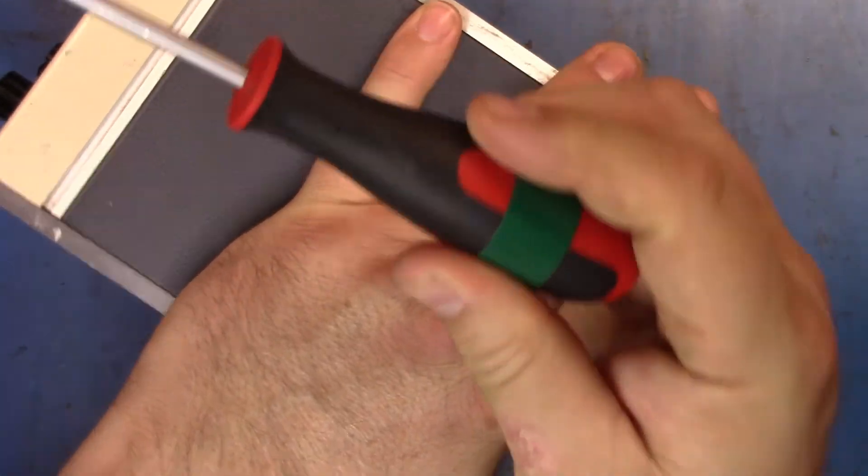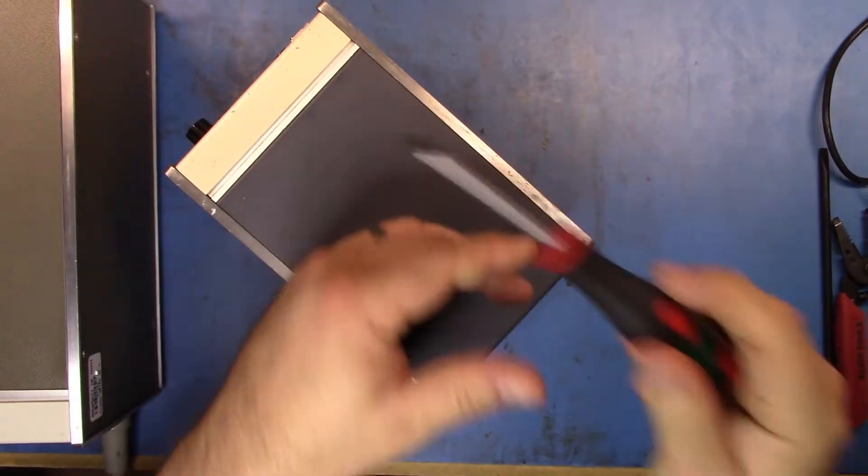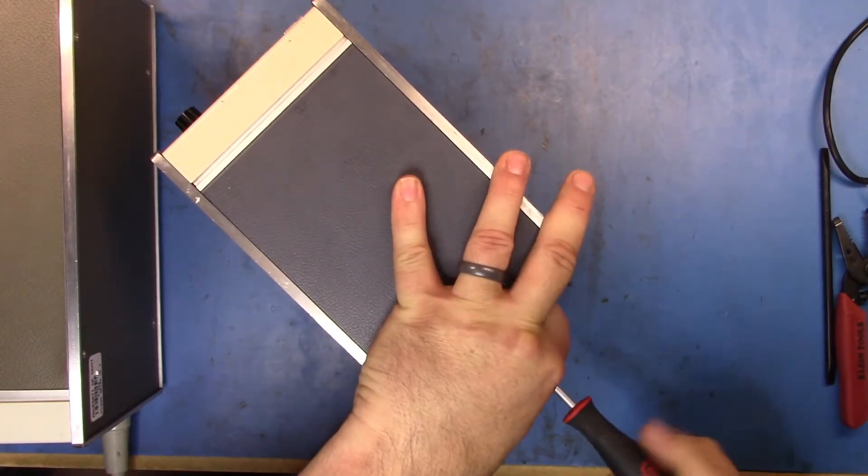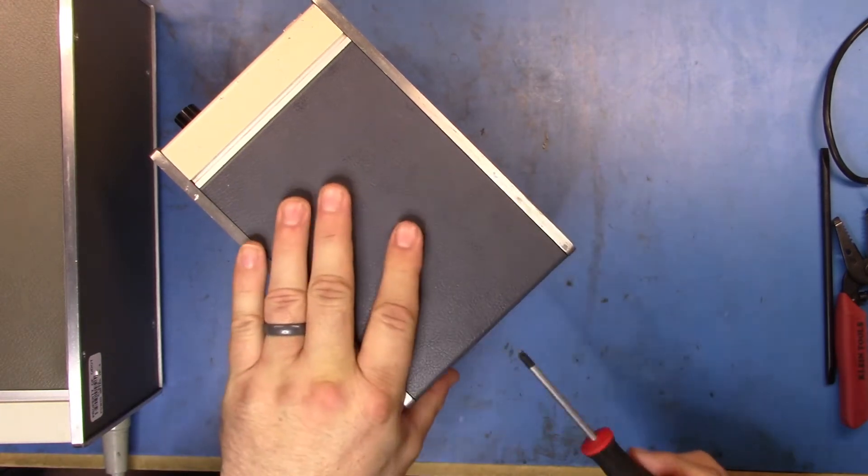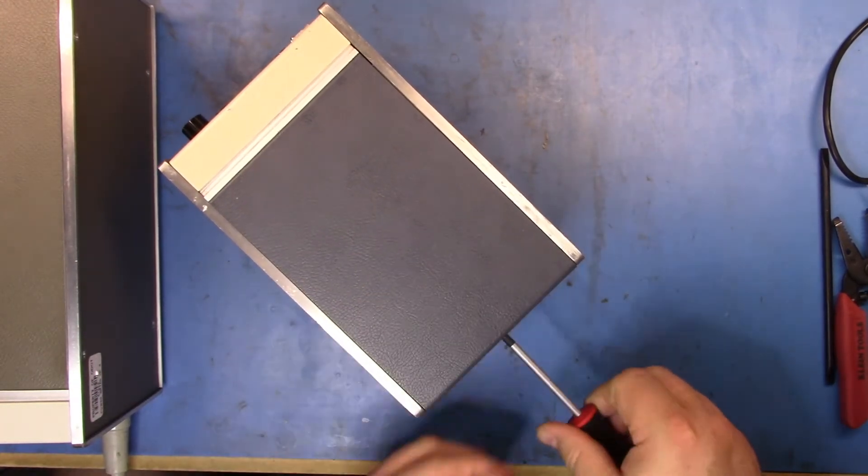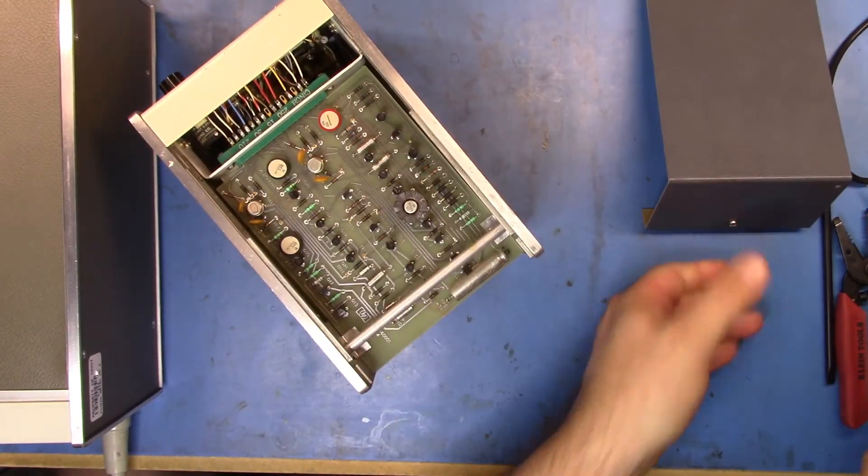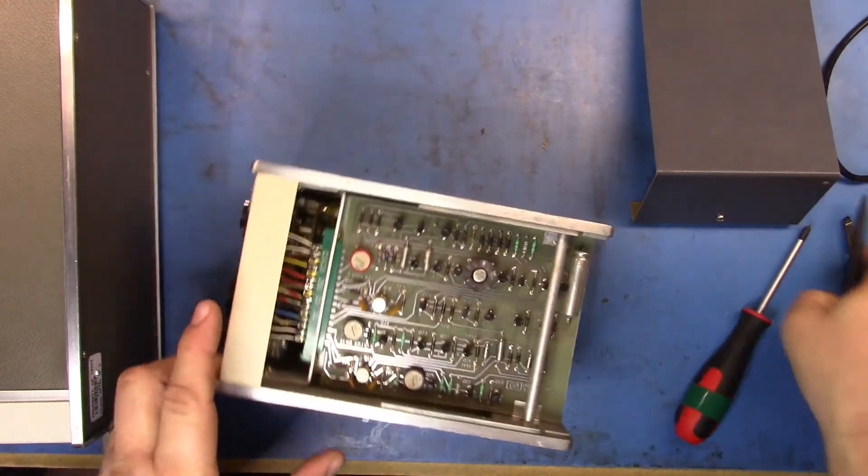So grab our, let me zoom back out. We'll grab our posi drive screwdriver, and we'll take the top off here. I expect there's going to be a lot of open space in this thing, because it's really not that very difficult or complex a unit.